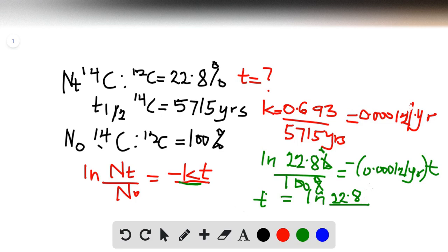So ln of 22.8 over 100, all divided by negative 0.000121 per year.